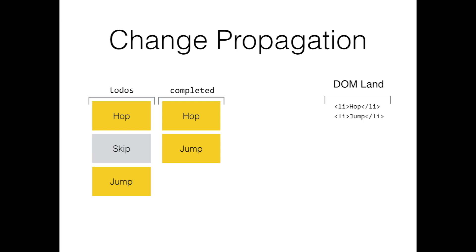This video explains how change propagation works. If you haven't watched how virtual DOM diffing works, it's helpful to watch that video first to understand the concepts here. The example app we will be using shows a filtered list of completed to-dos from a source list of all to-dos. We'll be changing skip to complete and want the completed list and the DOM to update accordingly.